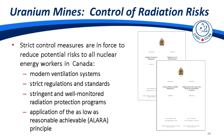To bring the discussion into a practical setting, we can look at uranium mines as a good example. Strict control measures are enforced to reduce potential risk to all nuclear energy workers in Canada. In uranium mines, there are modern ventilation systems, strict regulations and standards specific to the type of facility, stringent and well-monitored radiation protection programs, and application of the ALARA principle — keeping doses as low as reasonably achievable considering social and economic factors — implemented through management control over work practices, training of personnel, control of occupational and public exposures, planning for unusual situations, and radiological performance targets.